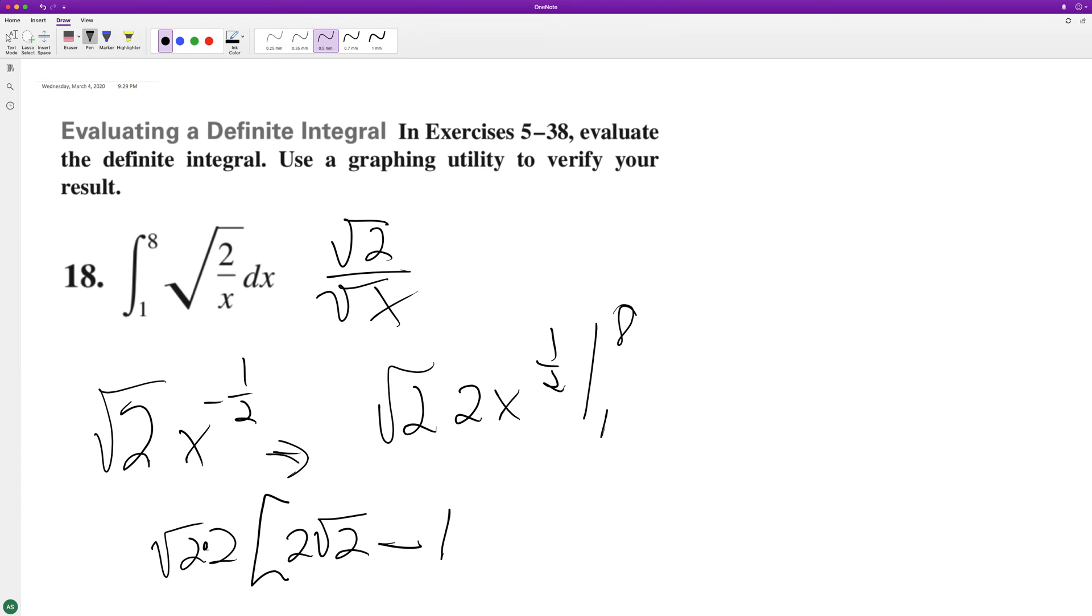The square root of 1 is just 1, so this ends up being 2 square root of 2 squared minus 2 square root of 2.